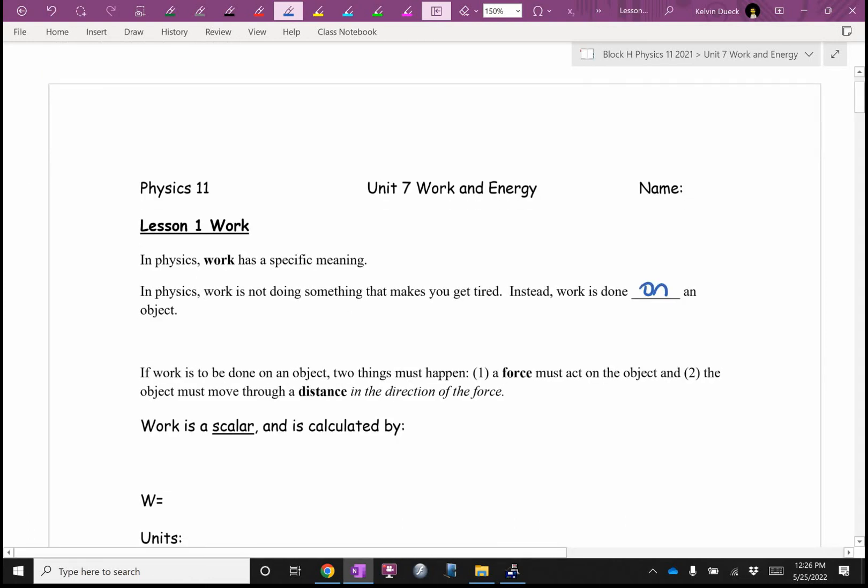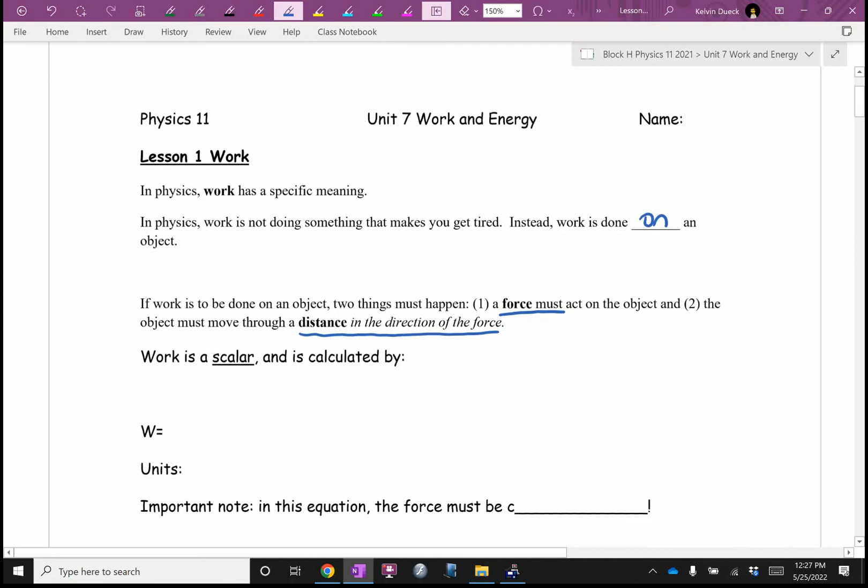For work to be done on an object, two things have to happen. Number one, a force must act on the object. And number two, the object must move through a distance, but there's a restriction in the same direction as the force. Work is calculated by force times distance. But the force and the distance have to be in the same direction.